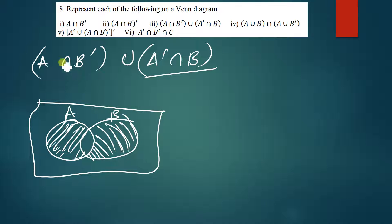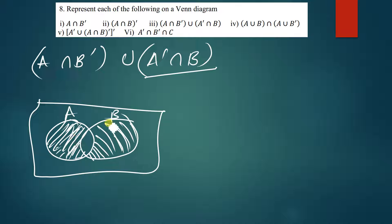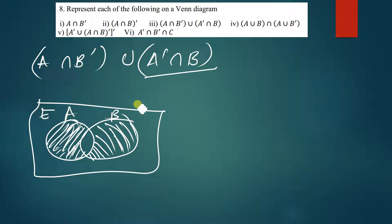We have A intersection B complement which is this part, and A complement intersection B which is this part. Now if we find the union set of these two, this is the final answer — there's no need to draw another Venn diagram. This is the final answer. If it were intersection, that's when we would shade the outside part.